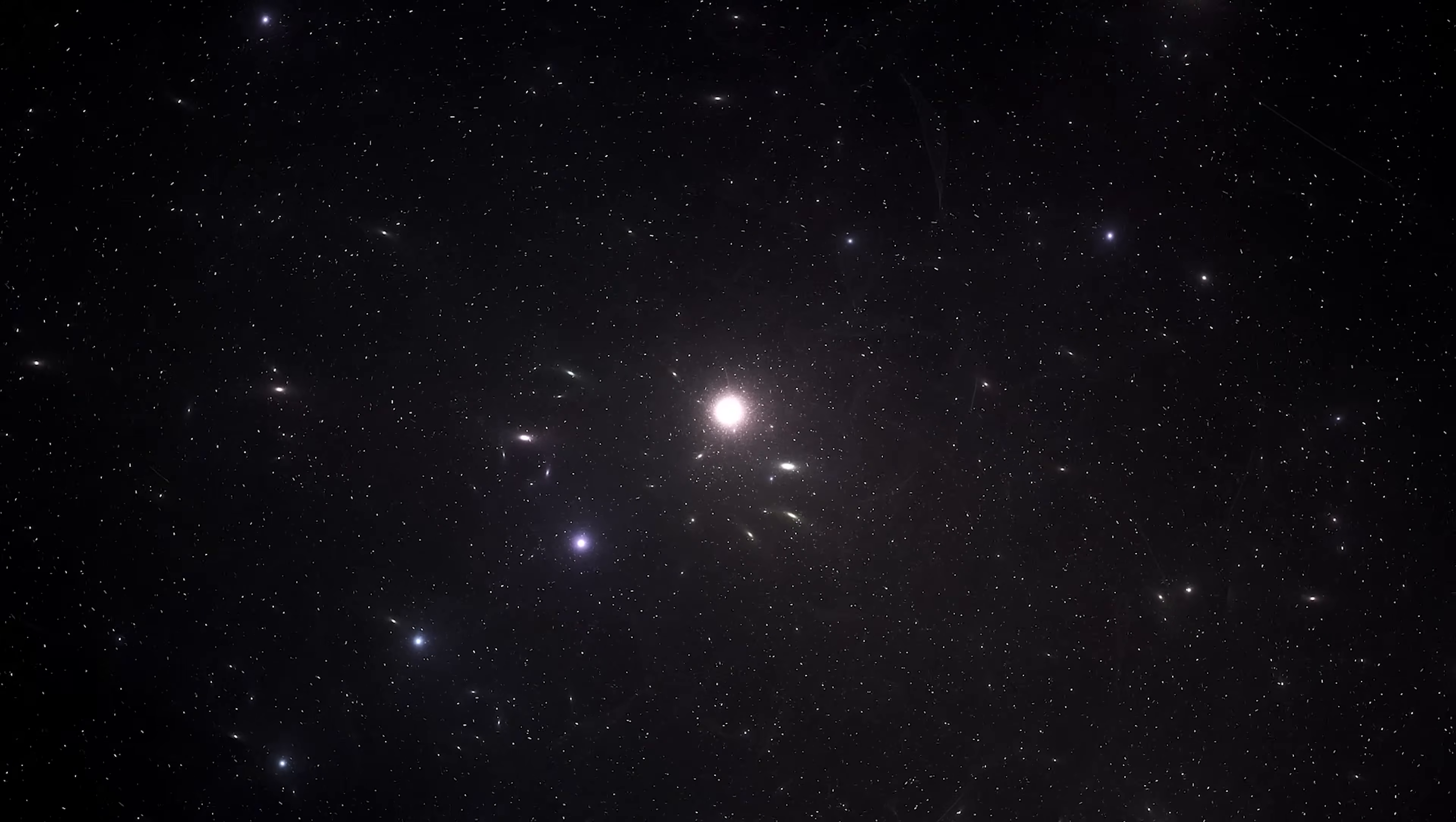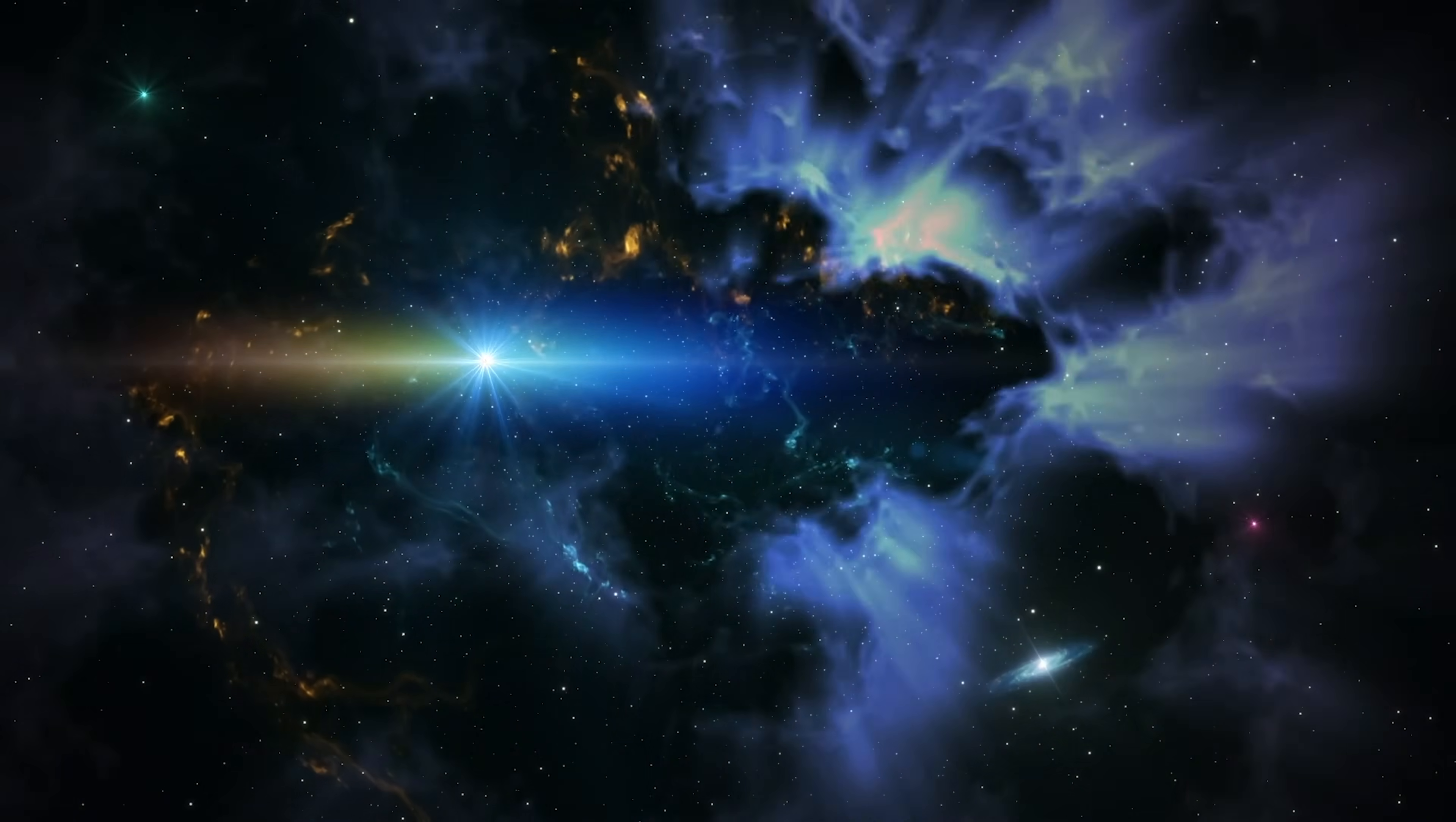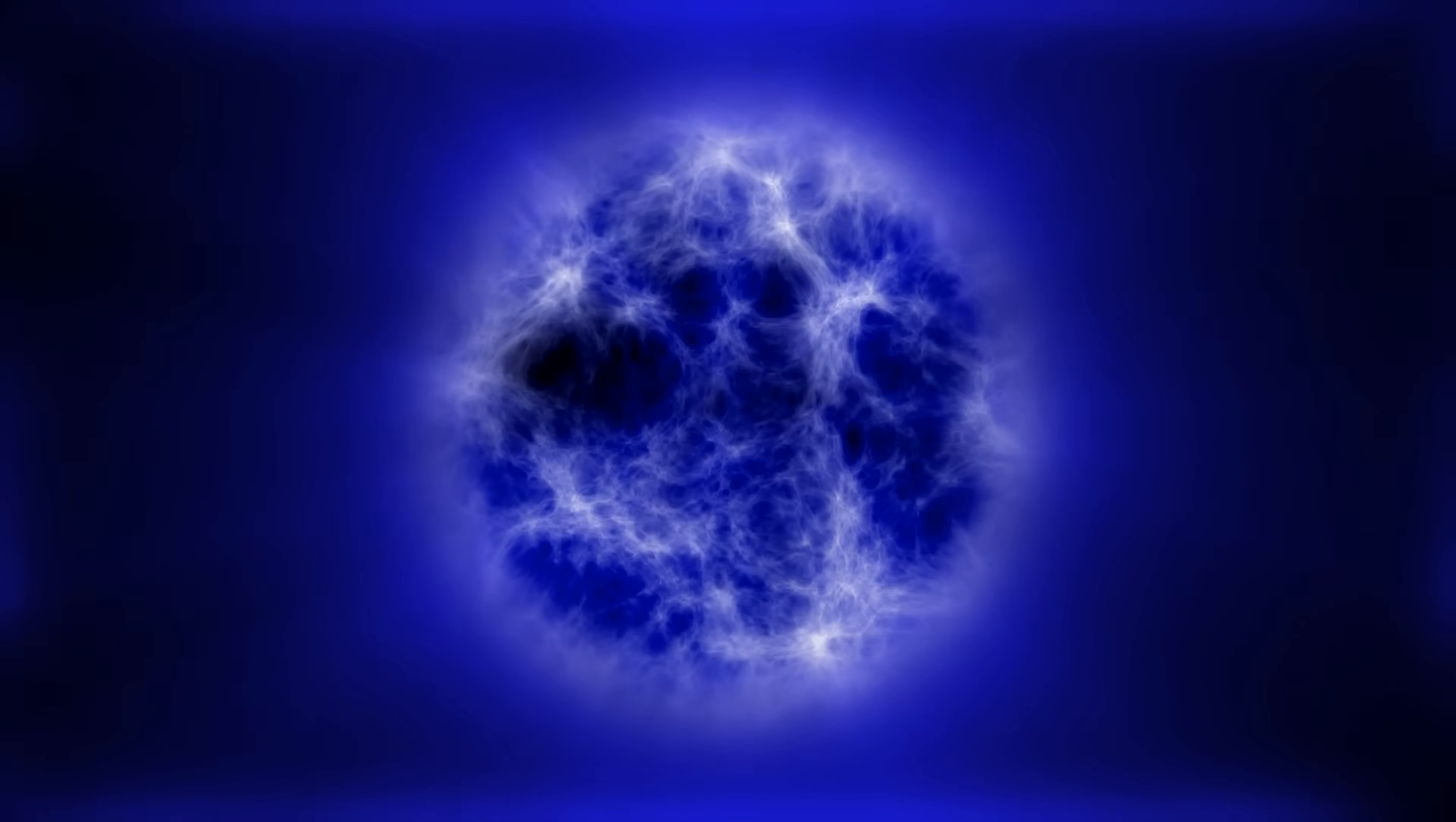And that wasn't the biggest shock. When scientists analyzed MOMZ-14's light using JWST's spectrograph, they discovered something no one predicted: an unusually high abundance of nitrogen. In the early universe, galaxies should be chemically simple, mostly hydrogen and helium. Heavy elements like nitrogen require generations of stars to form, live, and die. Yet MOMZ-14 already shows chemical complexity similar to ancient star clusters orbiting the Milky Way.